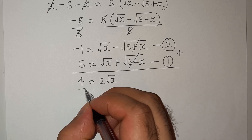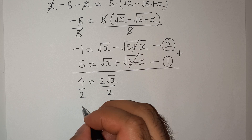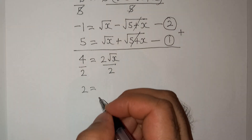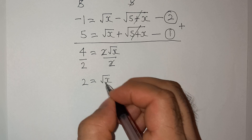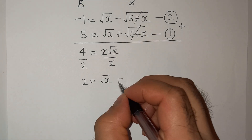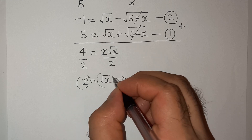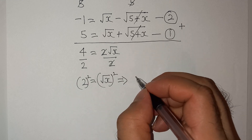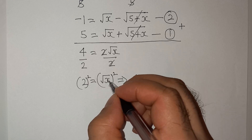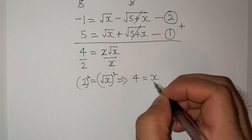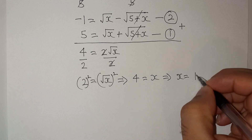So we are left with 4 = 2·root(x). Now it's easy to solve. Let's divide by 2 on both sides: 4 divided by 2 equals 2, so root(x) = 2. Squaring both sides: 2² = 4 and root(x)² = x. So the value of x is 4.